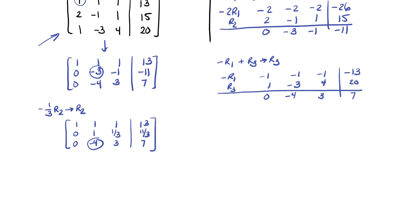Now we need to get a 0 there using R2. So if I'm working in the second column, I'm doing all row operations based on the second row. So I'm going to take 4 times the second row, add it to the third row, and that's going to give me a new third row. So let's see how that plays out. So 4 times the second row is 0, 4, 4 thirds, followed by the augment, and then 44 thirds. I'm not liking these numbers. Row 3 is 0, negative 4, 3, and 7.